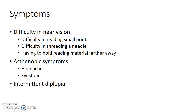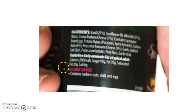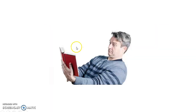Now what are the symptoms of presbyopia? Difficulty in near vision is the hallmark of presbyopia. The patient will complain of difficulty in reading small prints, difficulty in threading a needle, and having to hold reading material farther away to see clearly. There can be asthenopic symptoms like headaches and eye strain. The patient can also complain of intermittent diplopia. This is how small print appears to a patient with presbyopia — the prints are blurred. This is how a patient with presbyopia tends to read; he tends to keep the reading material far away from his eyes.